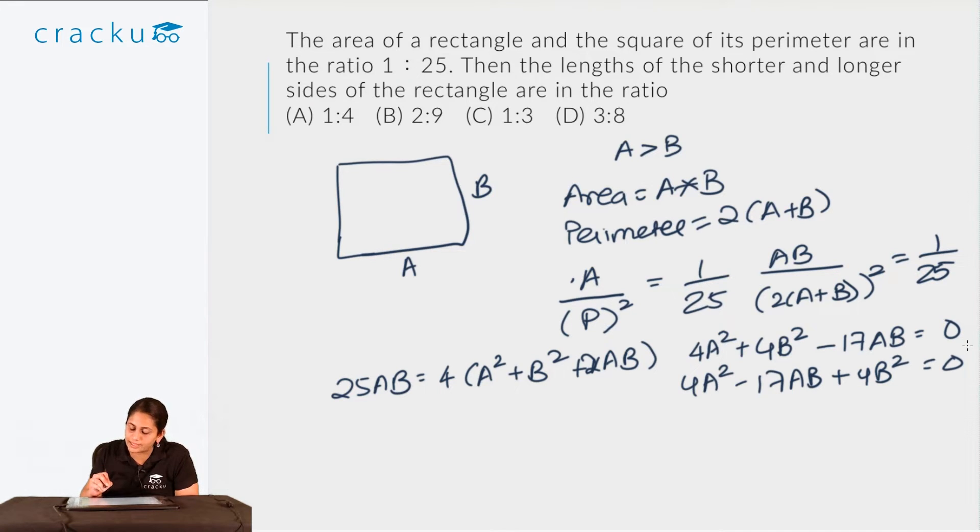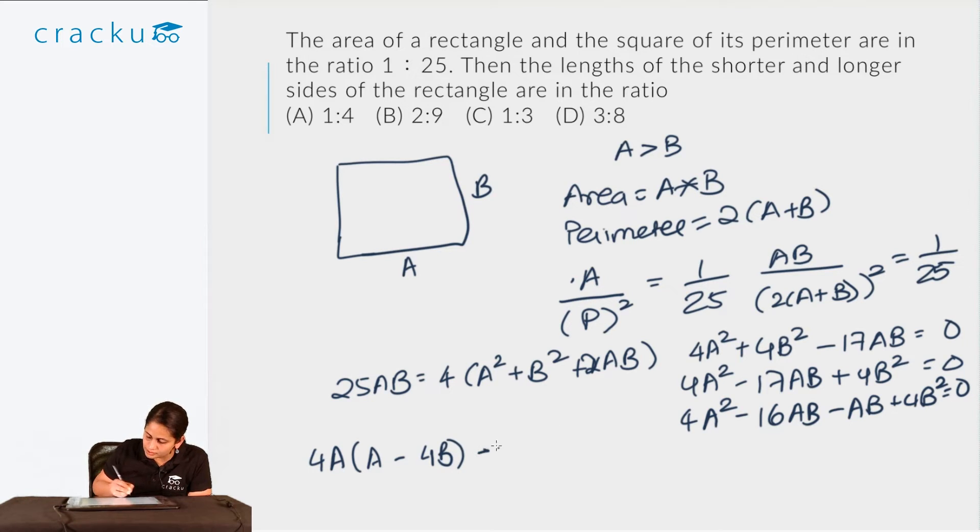So 4A square minus 17AB plus 4B square is equal to 0. So I can put this as 4A square minus 16AB minus AB plus 4B square equal to 0. So if I factorize, I get 4A times A minus 4B minus B times A minus 4B, this is equal to 0. So 4A minus B into A minus 4B is equal to 0. So 4A is equal to B or A is equal to 4B.